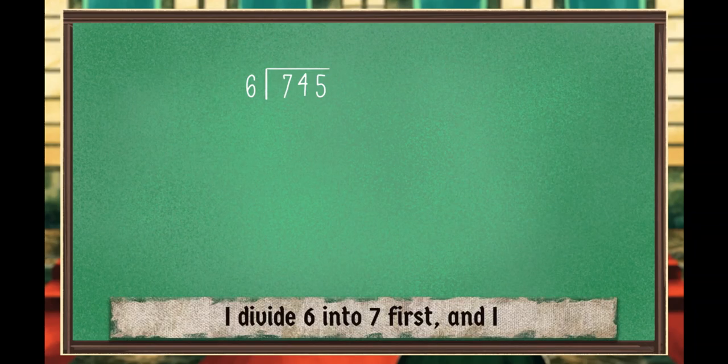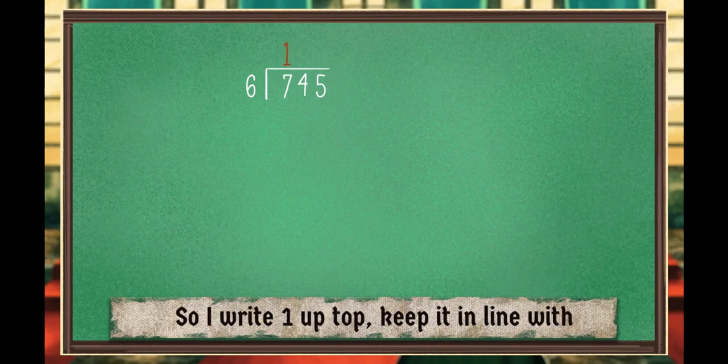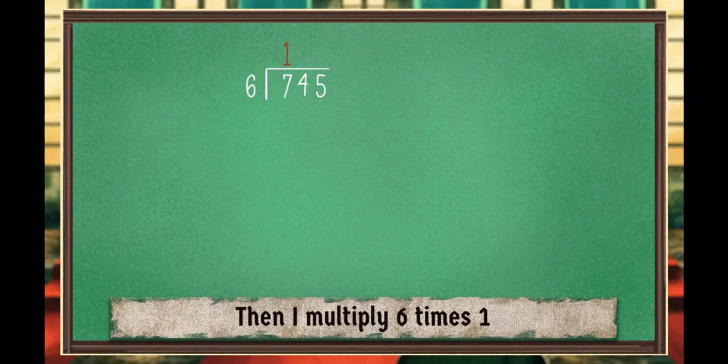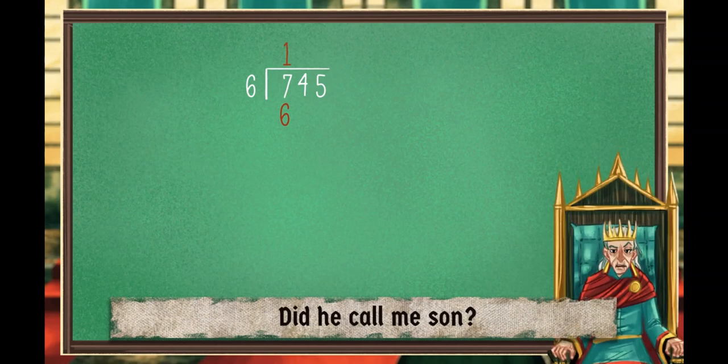I divide 6 into 7 first. And I know 6 fits inside 7 one time. So I write 1 up top and keep it in line with the 7. Since that's the one I divided. Then I multiply 6 times 1, that's 6. I write it down below here, son. He call me son.